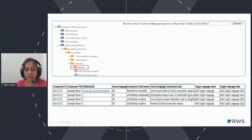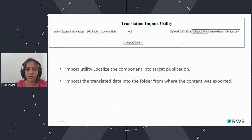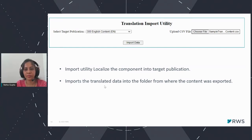Once the translation team adds everything into the CSV, you can go back to the import tool, select your target publication, choose the respective CSV file, and click the import button. It will localize the component into the target publication and add the translated data into the folder from where the content was exported during the export phase. This is how the utility works.